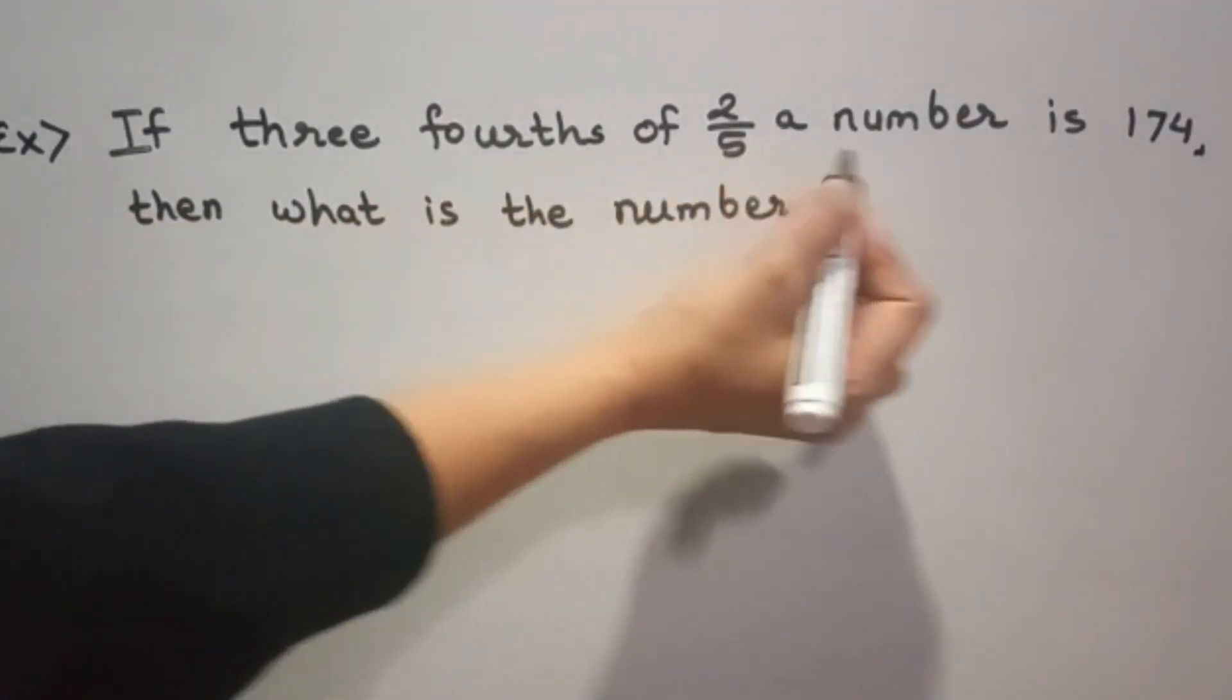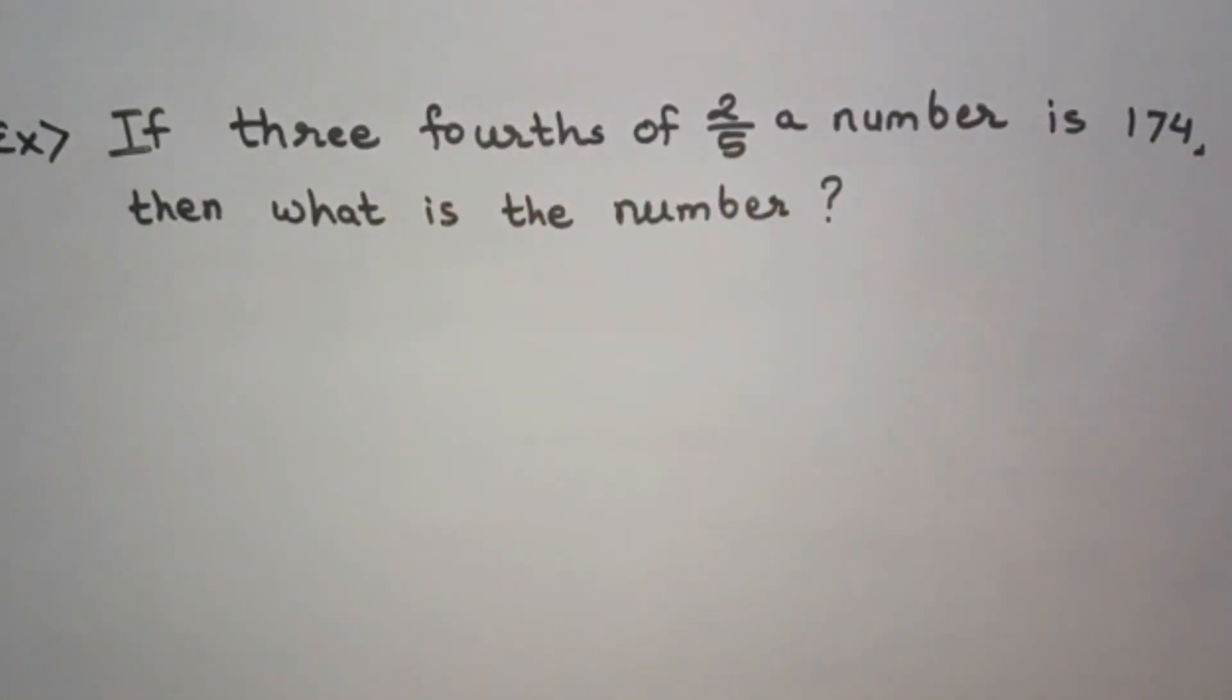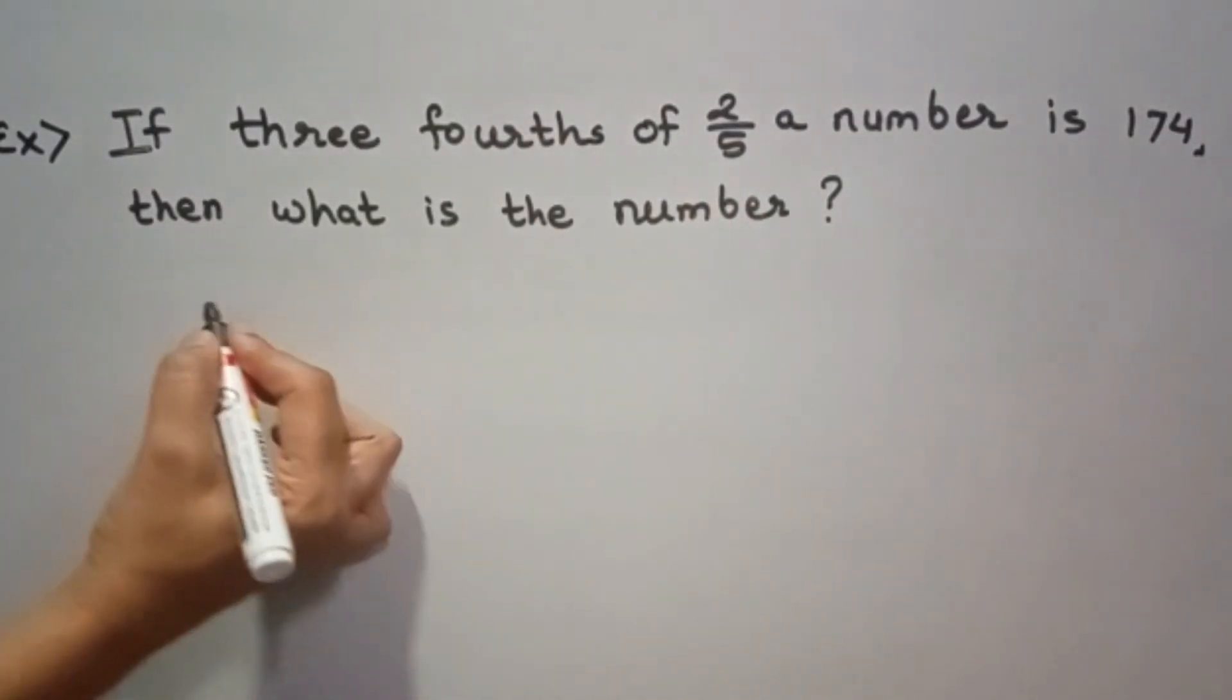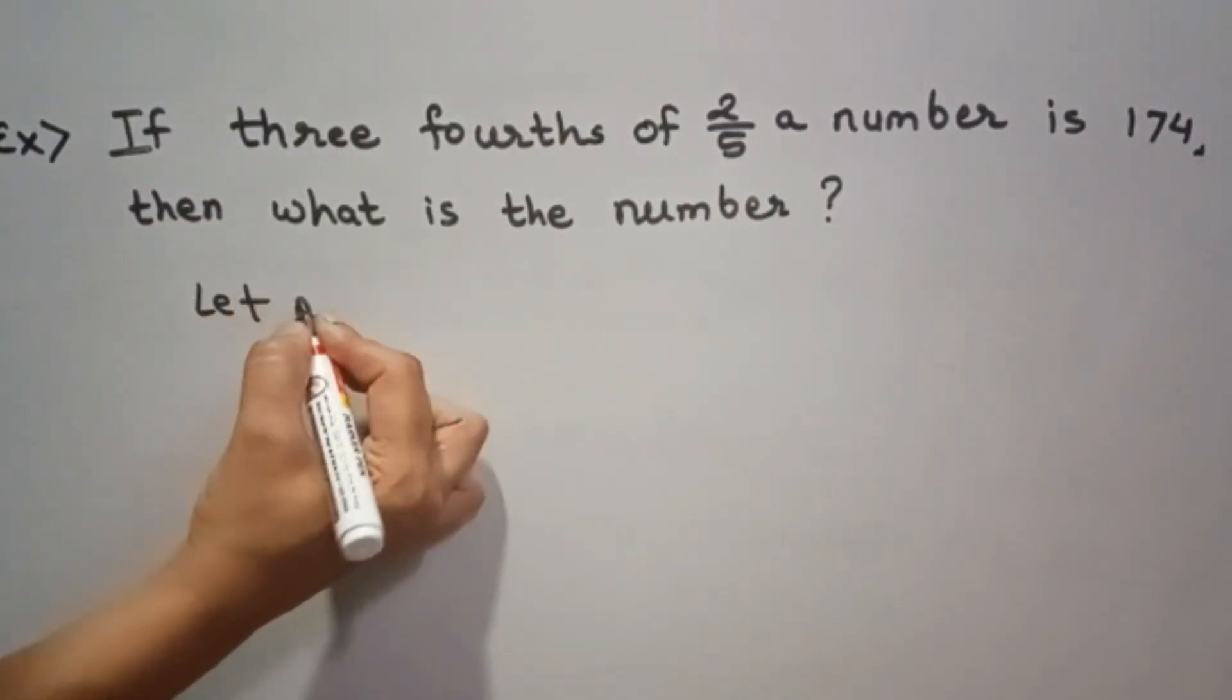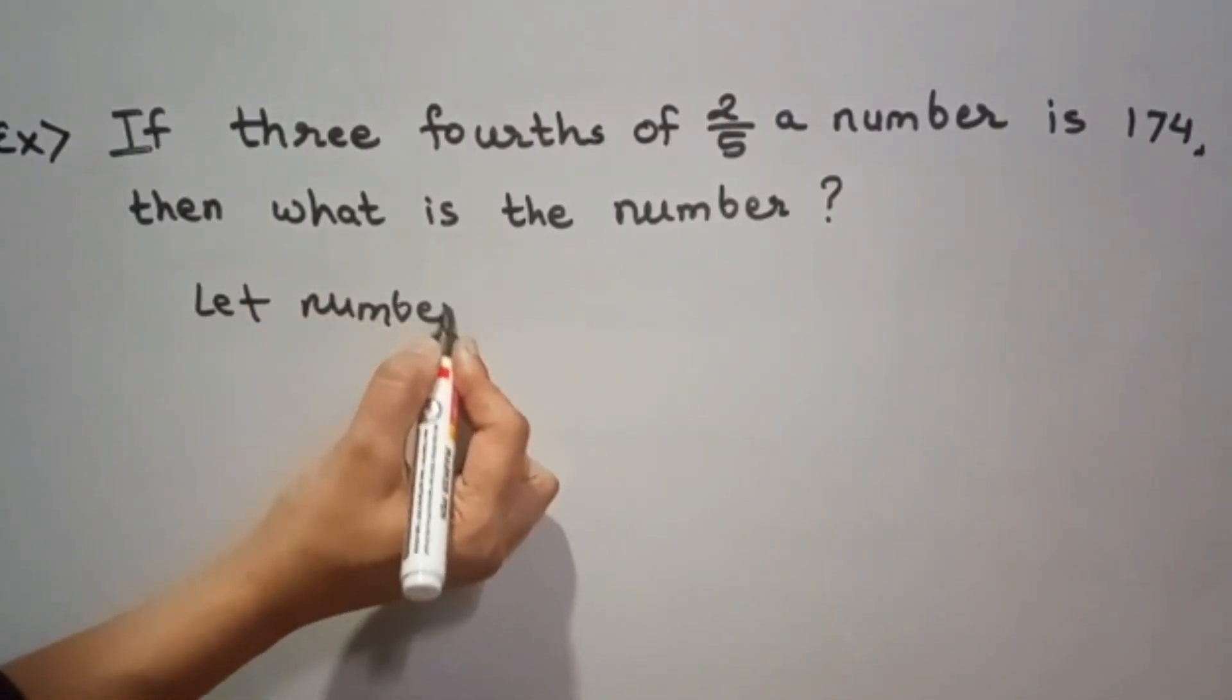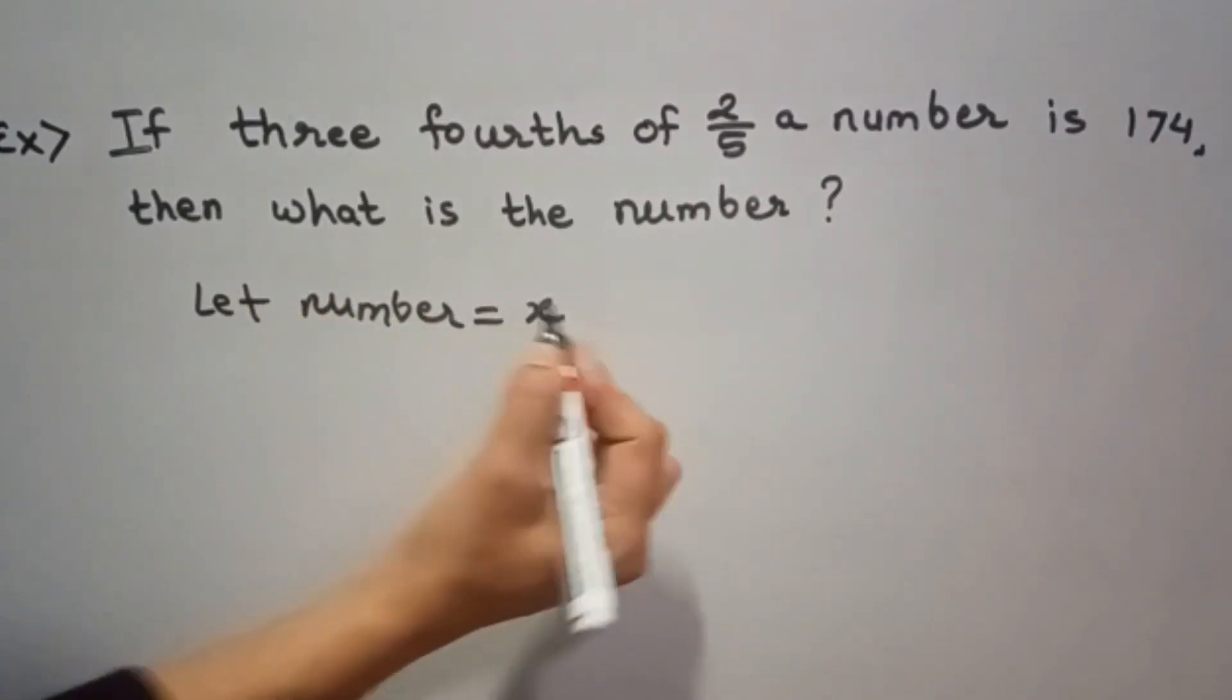If 3 fourths of 2 by 5 of a number is 174, then what is the number? Let the number be x. Let number is equal to x.